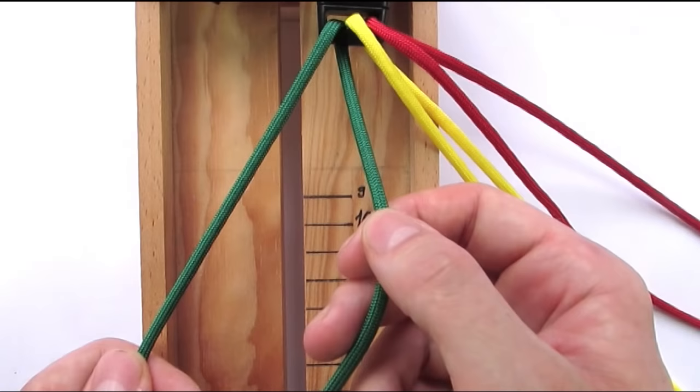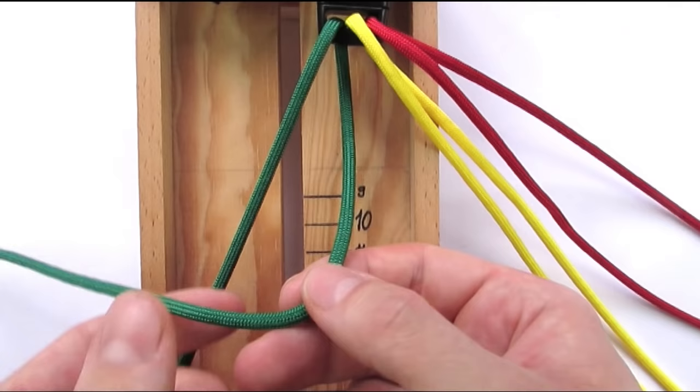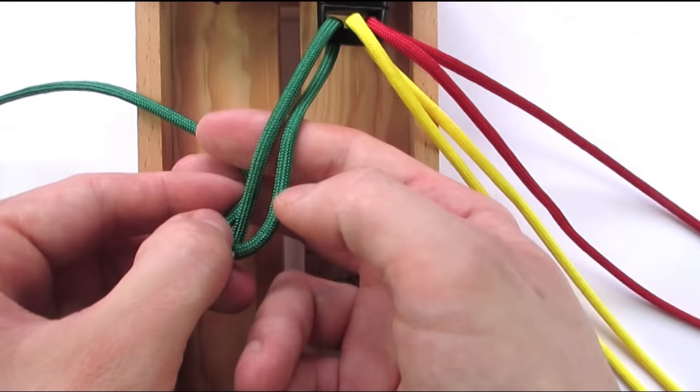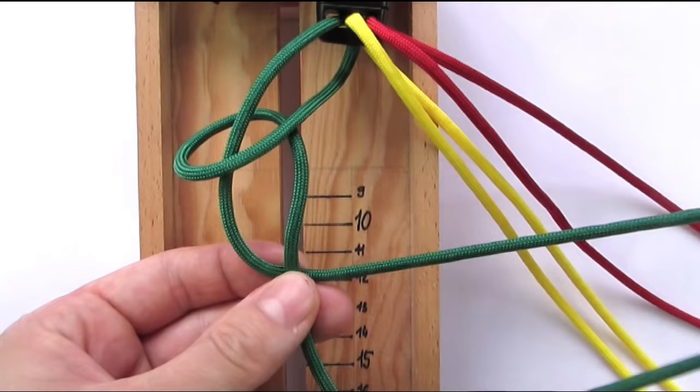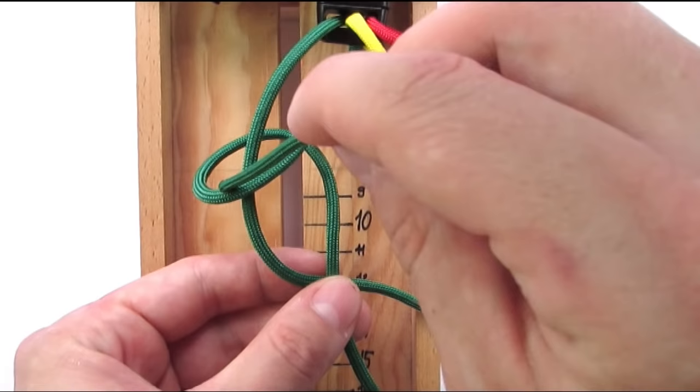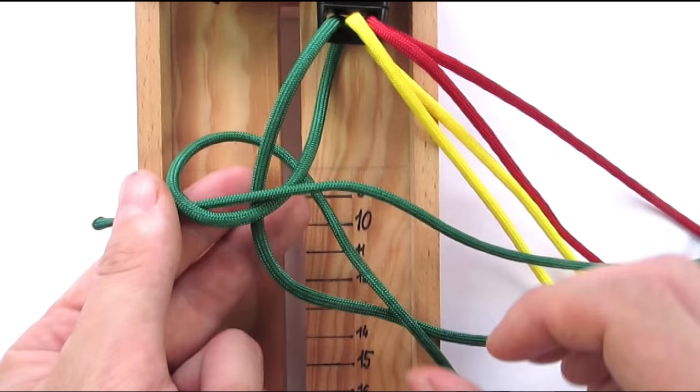We're going to start with our right cord which is the one under the buckle. We're going to start by going over the left, then back to the right side under everything. We're then going to take our left end, go under the right end, then over everything and into the loop on the left. And with this we have tied the first snake knot.